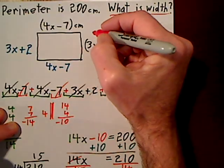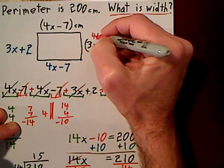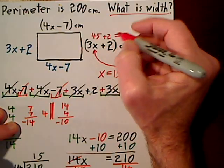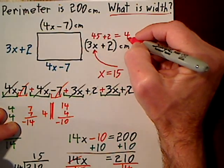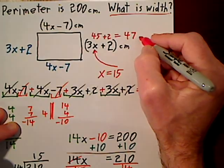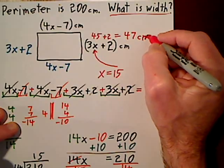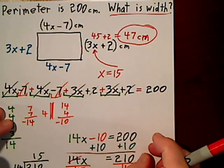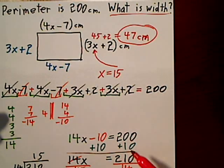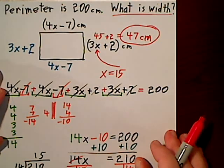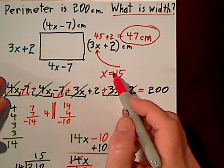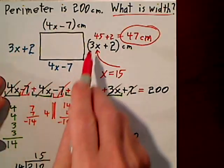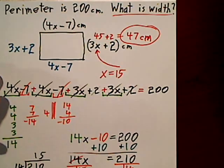So 3 times 15 is 45 plus 2. That gives us 47. The units are centimeters. So the width is 47 centimeters. If you want to go a little further and check it, if you plug in a 15 wherever there's an x and add all this stuff up, you're supposed to get 200.